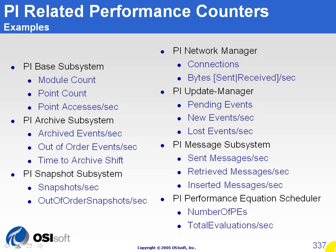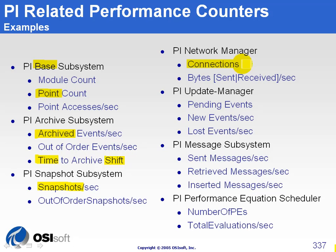Here are some examples of tags you could configure to monitor PI itself. For instance, you could look at the PI base subsystem to get the number of points currently configured on your system, or see the number of events archived per second, snapshot events per second, the time remaining to the next archive shift, how many connections are currently open on your server, or how many events are pending in your update manager subsystem.